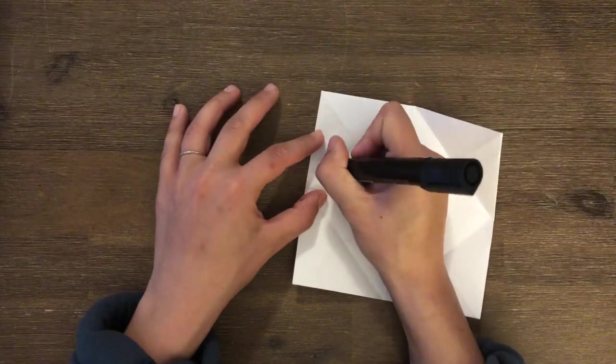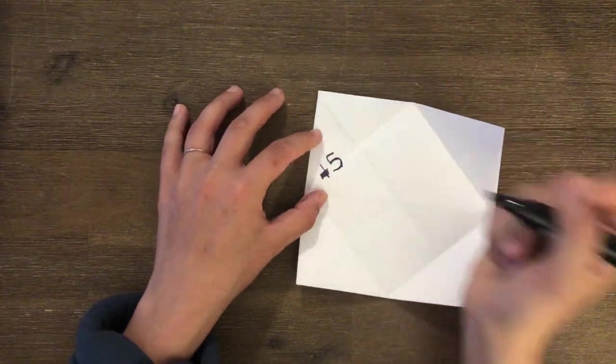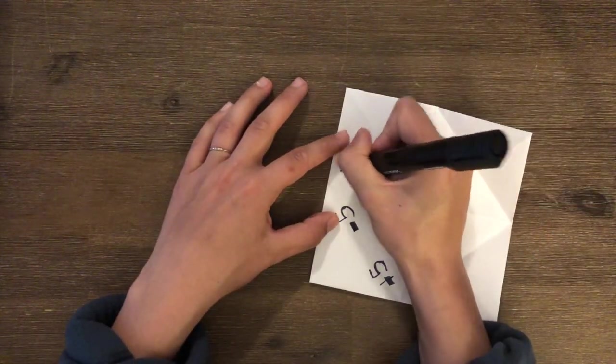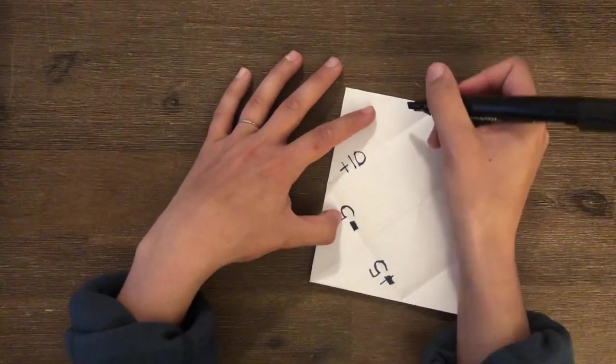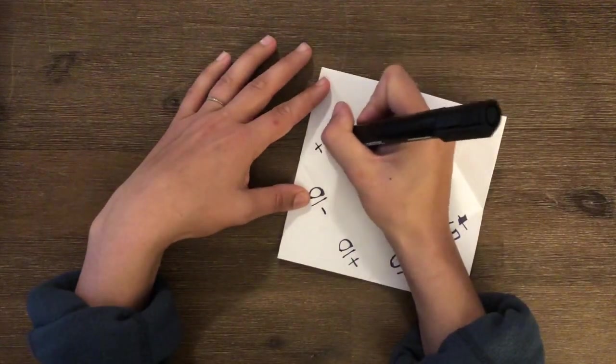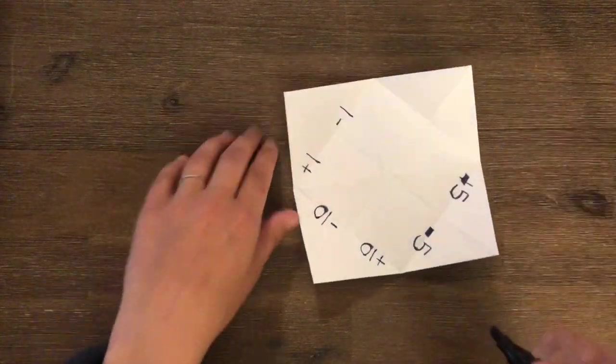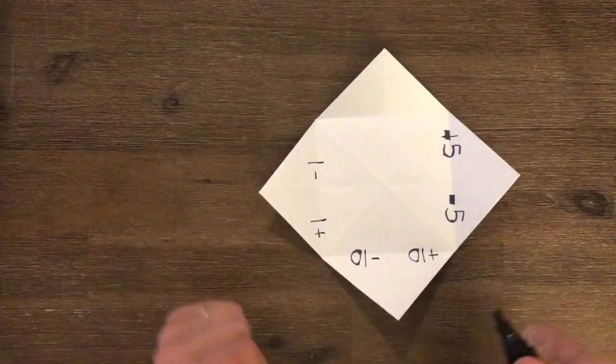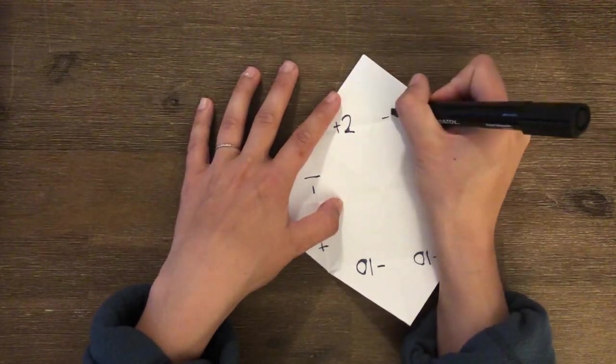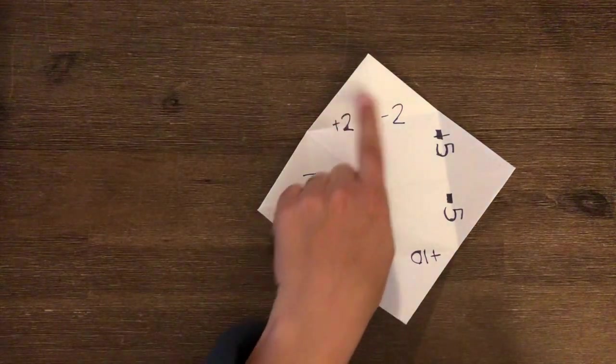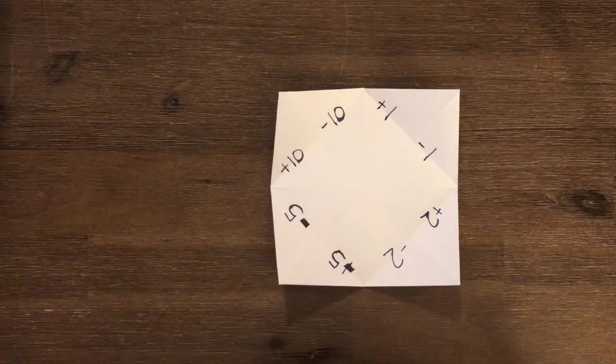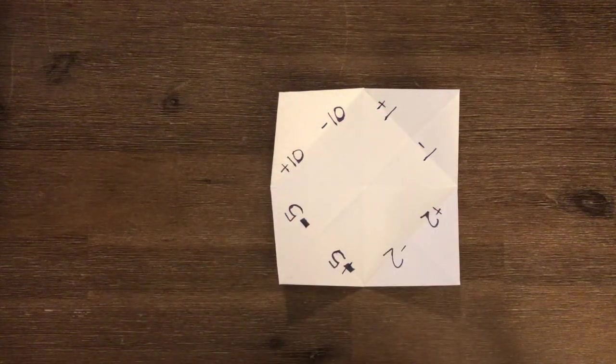So on one, I want you to put plus 5, minus 5, plus 10, minus 10, plus 1, minus 1. And you can choose what you put there. So I'm going to put plus 2 and minus 2, but you can put whatever you want in this last area. But I want you to put, I definitely want you to put plus 10 and minus 10, and plus 1 and minus 1.